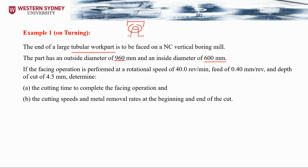The facing operation is performed at a rotational speed of 40 rev per minute, a feed rate of 0.4 millimeter per revolution, and a depth of cut of 4.5 millimeters. We need to find the cutting time to complete the facing operation and the cutting speed and metal removal rate at the beginning and end of the cut.